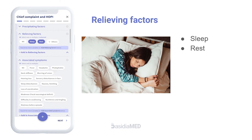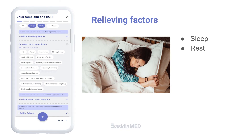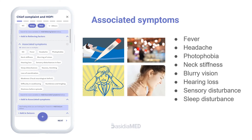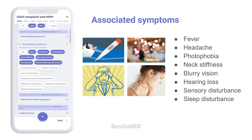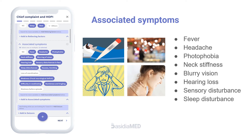Seizure episodes are often associated with characteristic features that can help diagnose the cause or type of seizure. Some of these symptoms include fever, headache, photophobia, and neck stiffness, pointing towards infective causes such as meningitis. Blurring of vision, hearing loss, sensory disturbances, and sleep disturbances may indicate a growth causing neurological compression. Other symptoms include muscle weakness, difficulty in swallowing, numbness, dizziness preceding the episode, visual disturbances, auditory hallucinations, sweating, and salivation.